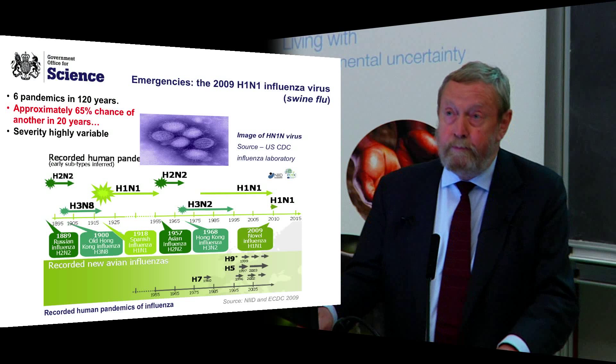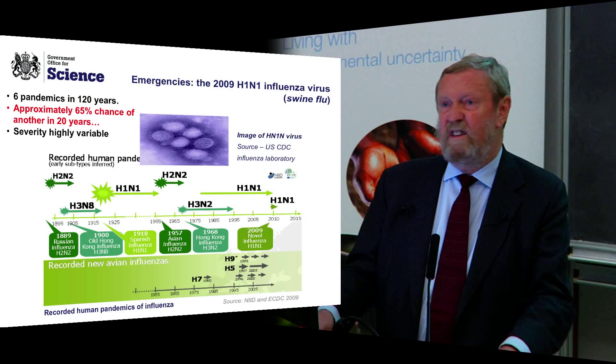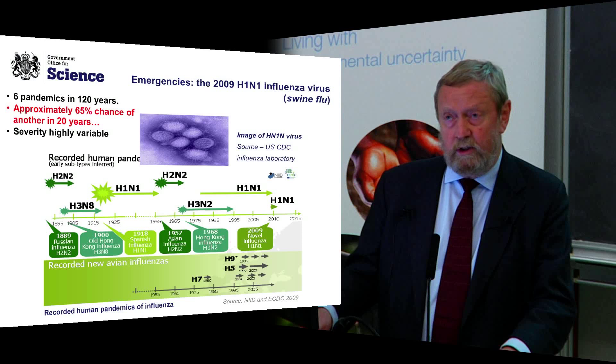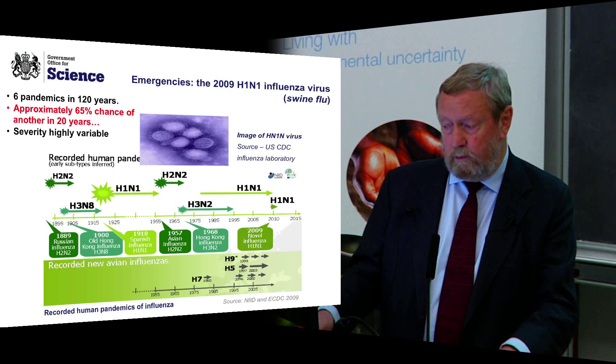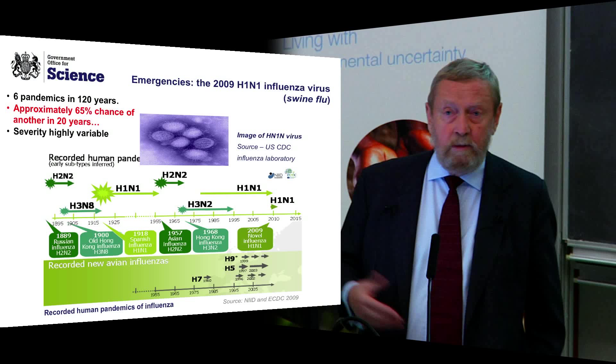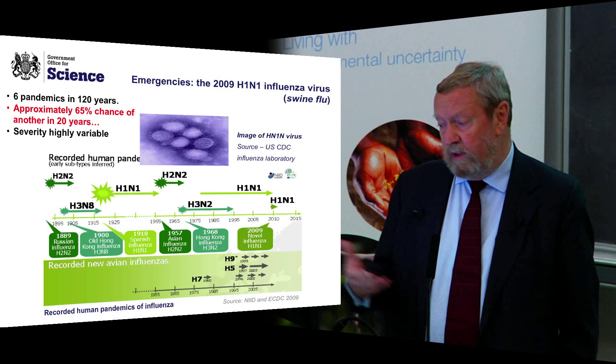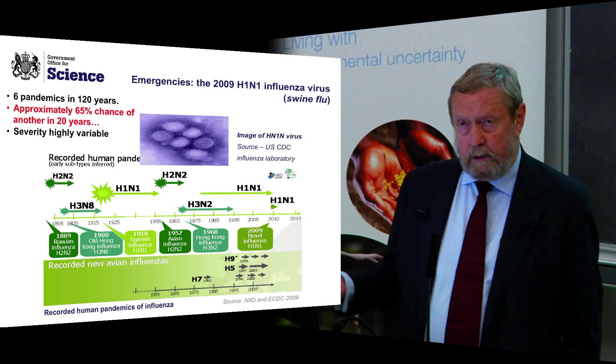Swine flu was first noted in Mexico in early April, and by the first couple of weeks of May it was in about 40 to 50 countries around the world. The early information we were getting showed quite a lot of mortality in groups — pregnant women rather tragically — not so much the very young and very old, but there were quite a lot of deaths. We knew nothing about it; it was a genetic composition which had not been seen before, and we had not expected it. The worry was that this was going to be somewhat similar to bird flu.